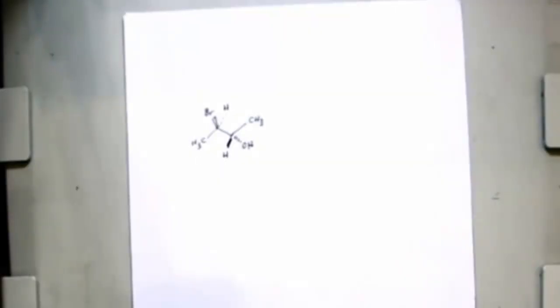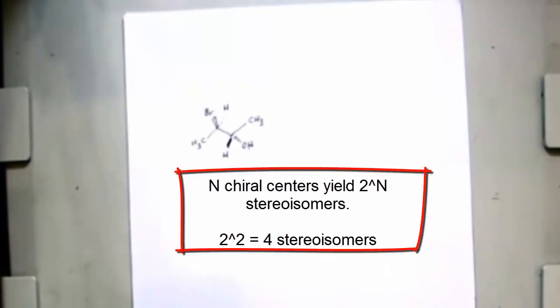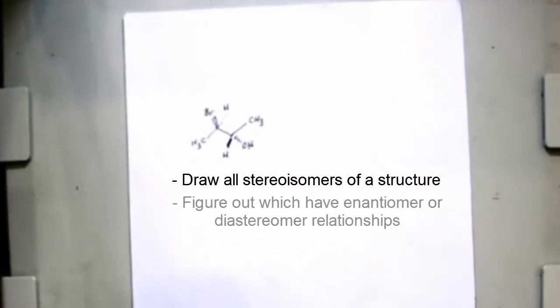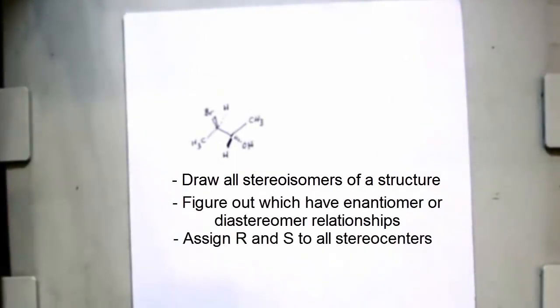So here's a molecule, bromo alcohol, and it's got two chiral centers. I expect to be able to draw four stereoisomers. I need to draw them quickly, I need to figure out which ones are enantiomers of one another, I need to assign R/S, I need to get all of that done.